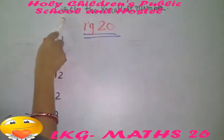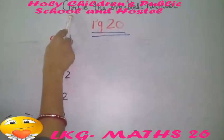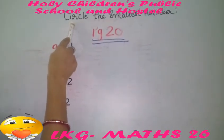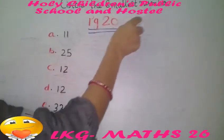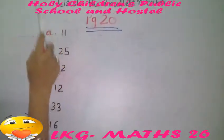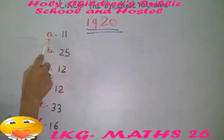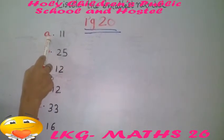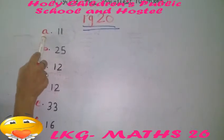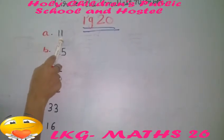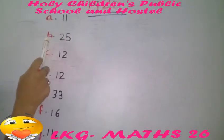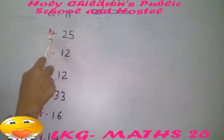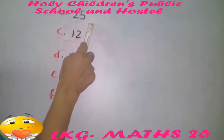Now we will learn from your notebook page number 20. Circle the smallest number. In the first row, number A, the smallest number is 11. Then B, 25.